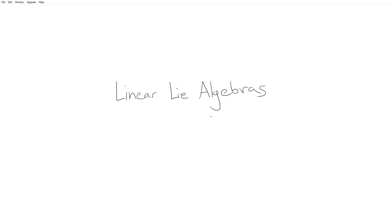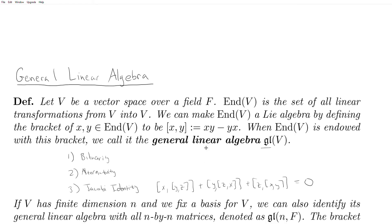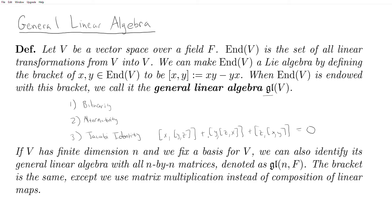First, historically this is what motivated the study of Lie algebras. Second, it's a concrete example that everyone's familiar with. It turns out that any finite-dimensional Lie algebra can actually be identified with some linear Lie algebra, so studying the linear Lie algebras is actually sufficient. This is harder to prove, so I won't justify that. However, in the semi-simple case, which we devote a lot of study to, it's really clear that any semi-simple Lie algebra can be identified with a linear Lie algebra — that's a much easier proof.